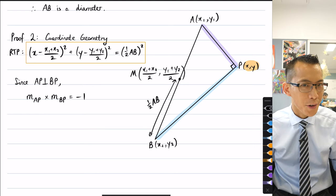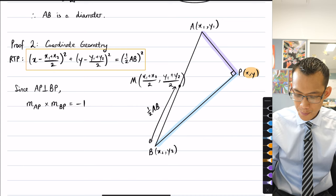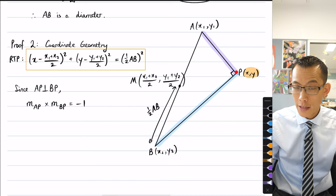what I can say is the gradient of AP times the gradient of BP is equal to negative one. Well, what are the gradients of AP and BP? I just have to use the gradient formula from this point to A, and then from this point to B.